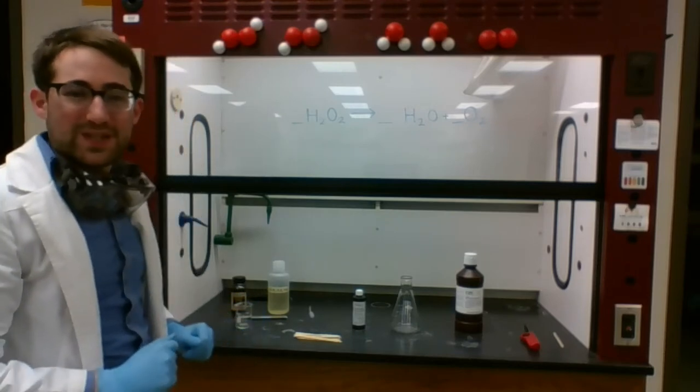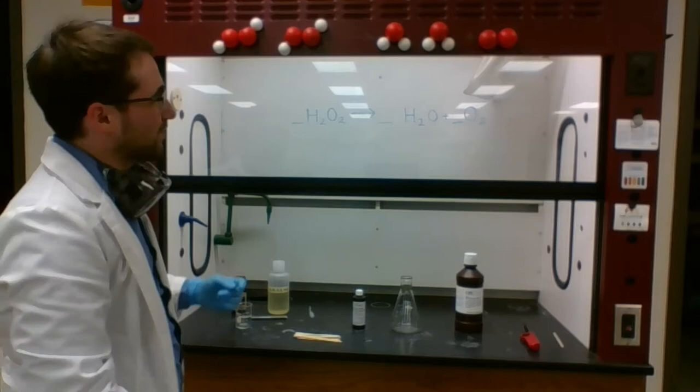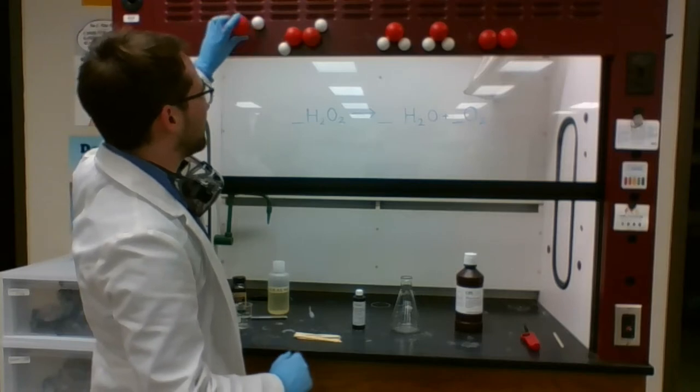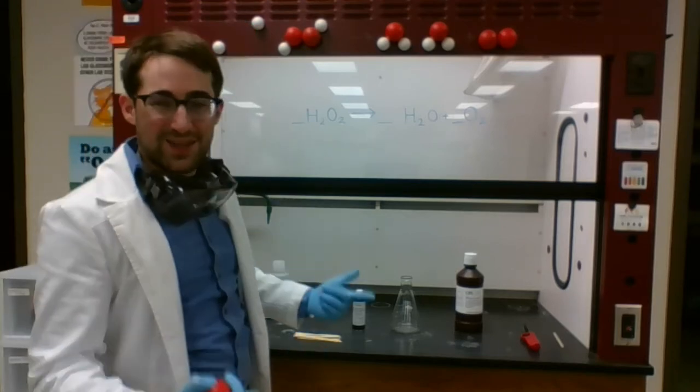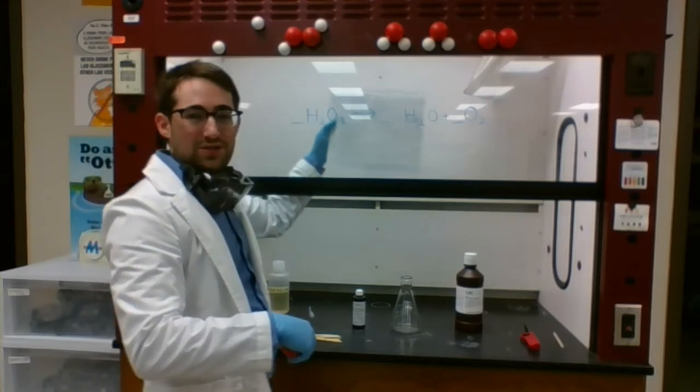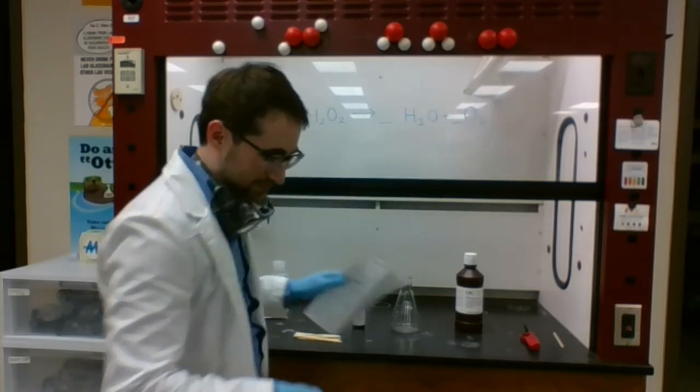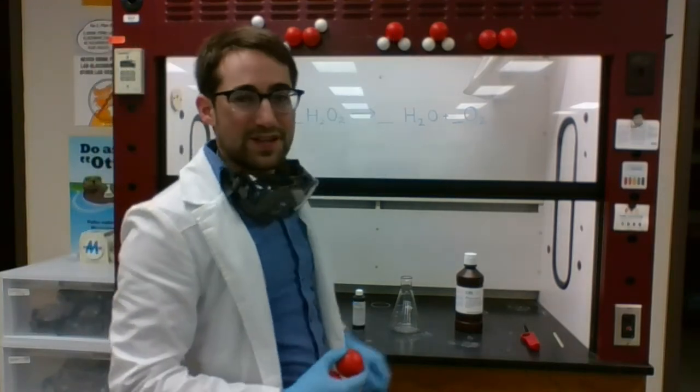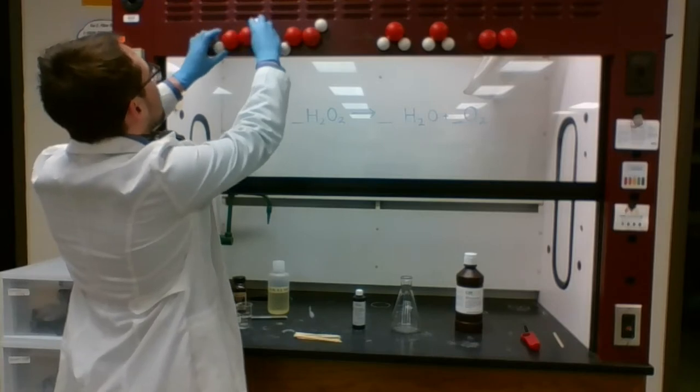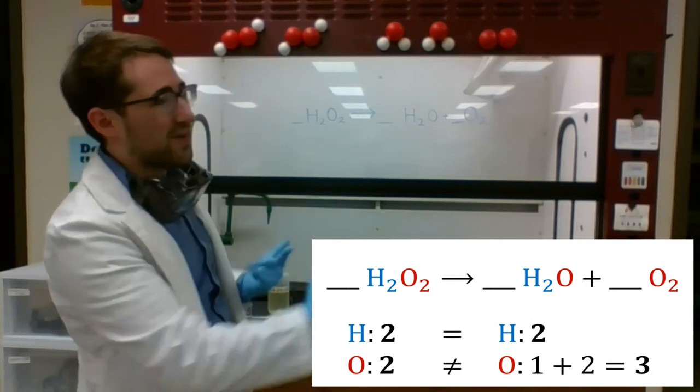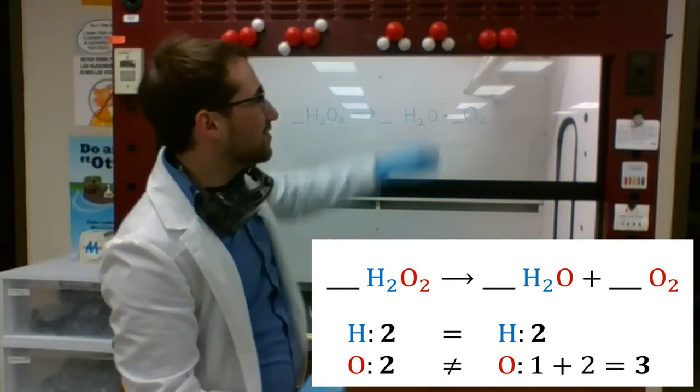In this case, the chemical that's going to be decomposing is hydrogen peroxide, H2O2. Now, based on how this reaction shakes out, one molecule of H2O2 is not enough to make what we expect in the products, which would be H2O and O2. Our balancing should show that we need two molecules of H2O2 to rearrange their atoms to make two H2O's and one O2.